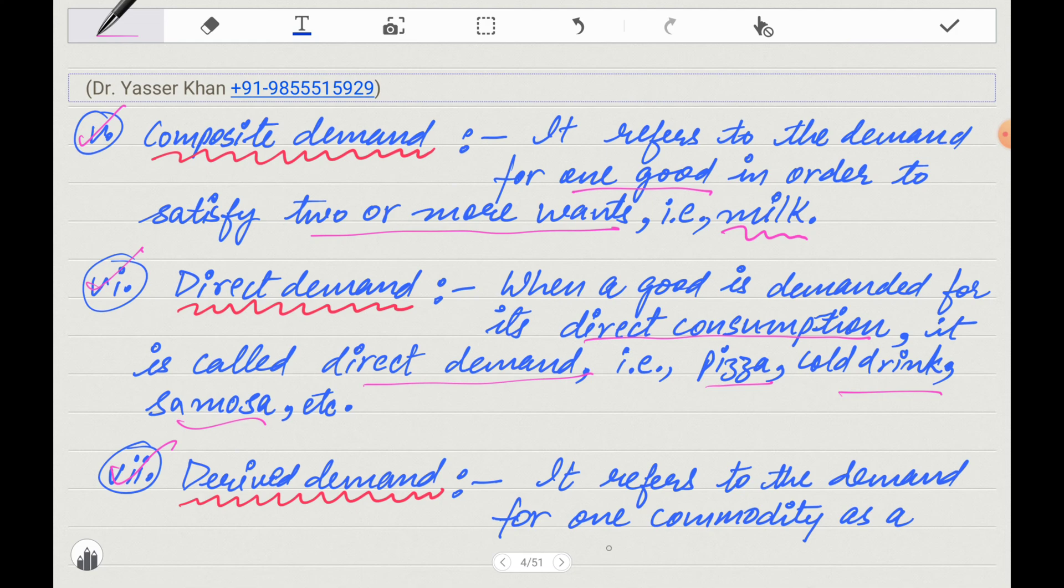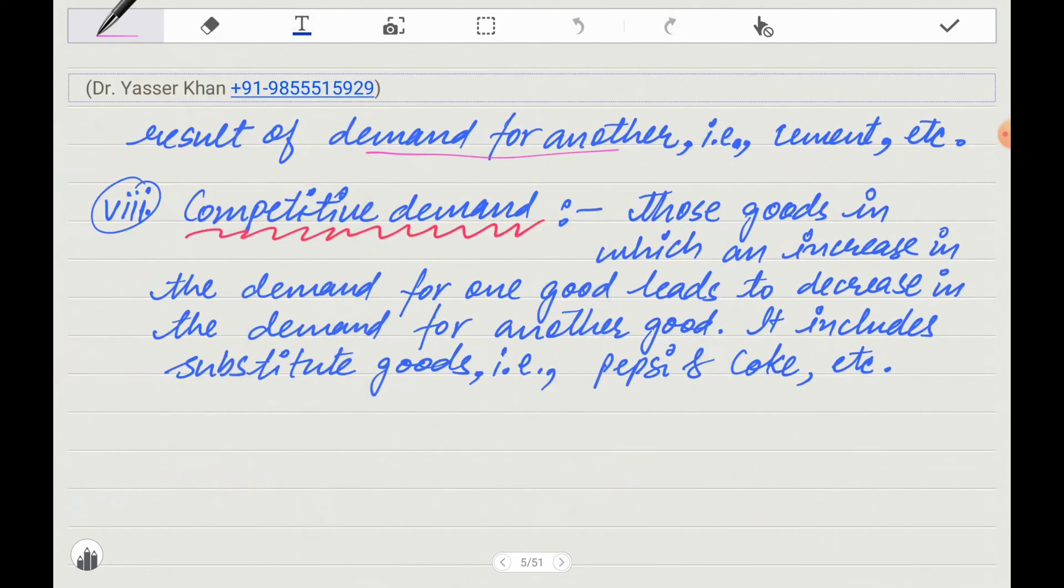Derived demand refers to the demand for one commodity as a result of demand for another commodity. Examples include cement and bricks, or tea leaves.